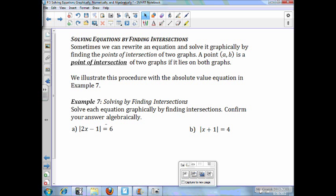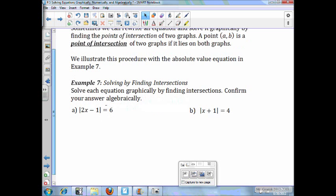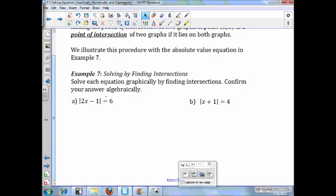Solving equations by finding intersections. Sometimes we can rewrite an equation solving graphically by finding the points of intersection of two graphs. A point AB is a point of intersection of two graphs if it lies on both graphs. We illustrate this procedure with the absolute value equation in example 7. Solve each equation graphically by finding intersections. Confirm your answer algebraically.